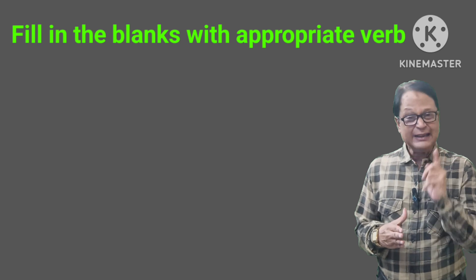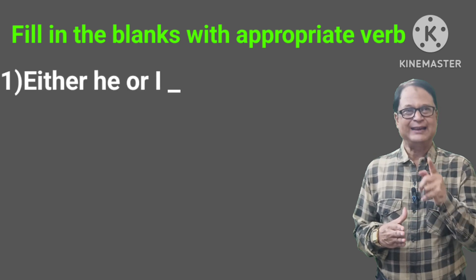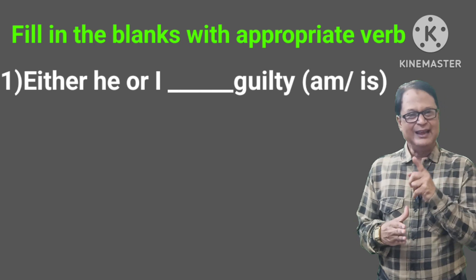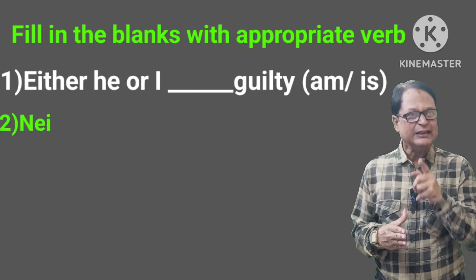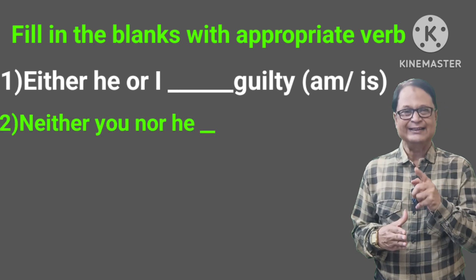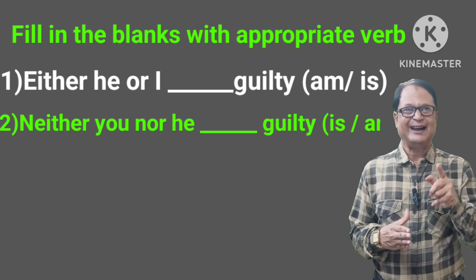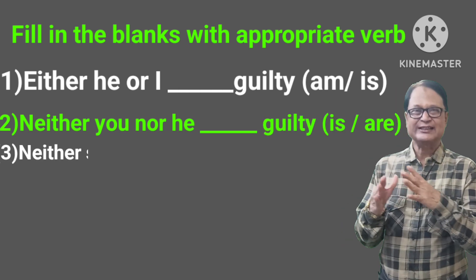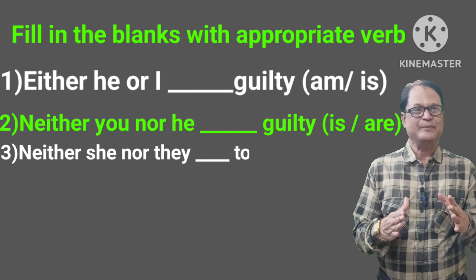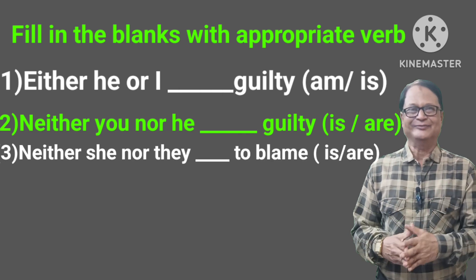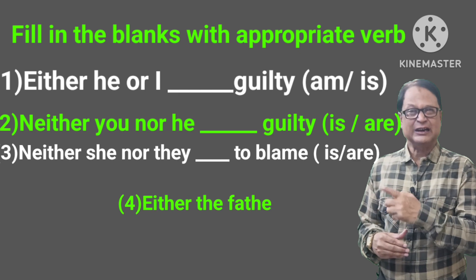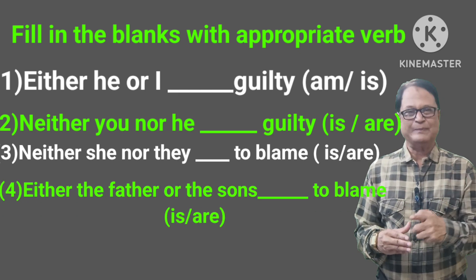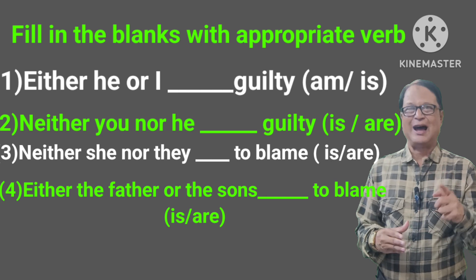Number one: Either he or I — am or is? Number two: Neither you nor he — dash — greatly, is or are? Number three: Neither she nor they — dash — to blame, is or are? Number four: Either the father or the sons — dash — to blame, is or are?